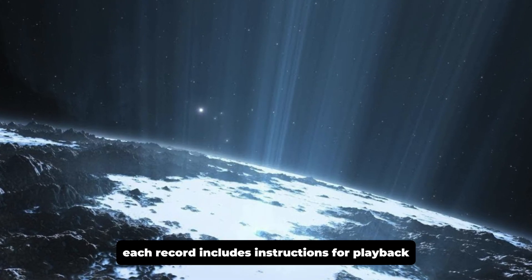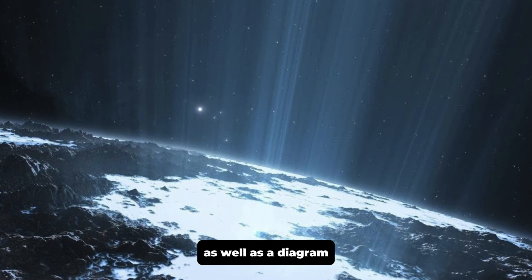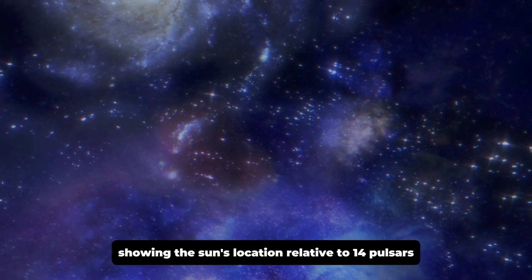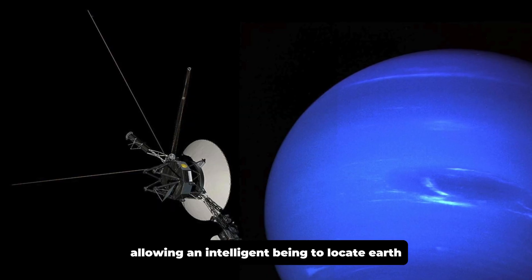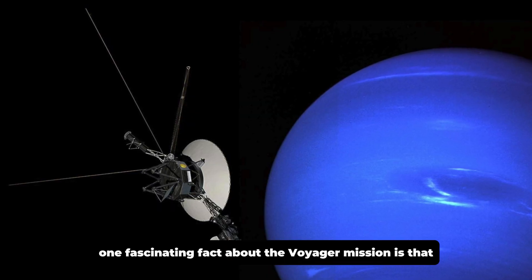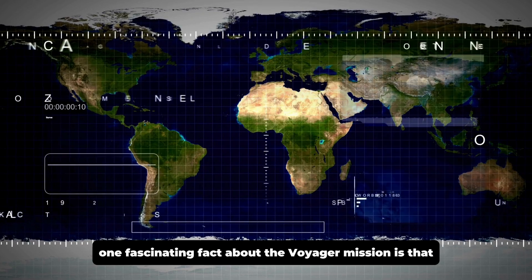Each record includes instructions for playback, as well as a diagram showing the sun's location relative to 14 pulsars, allowing an intelligent being to locate Earth.